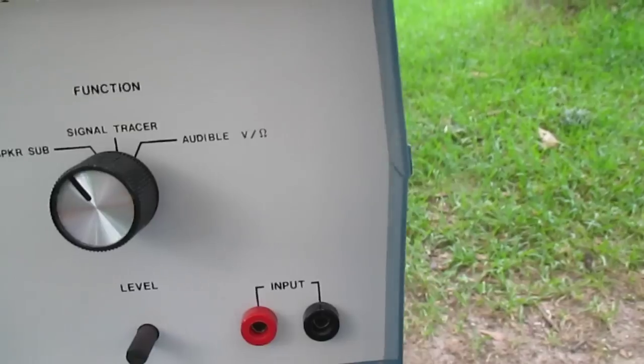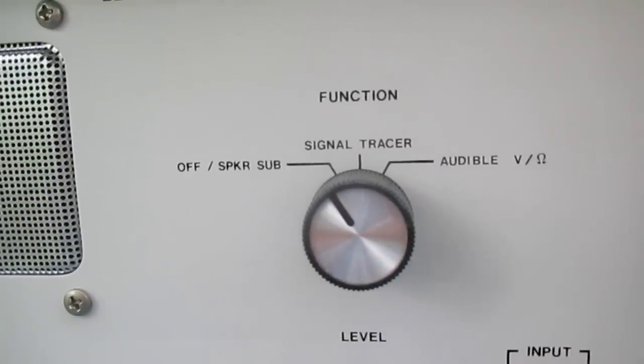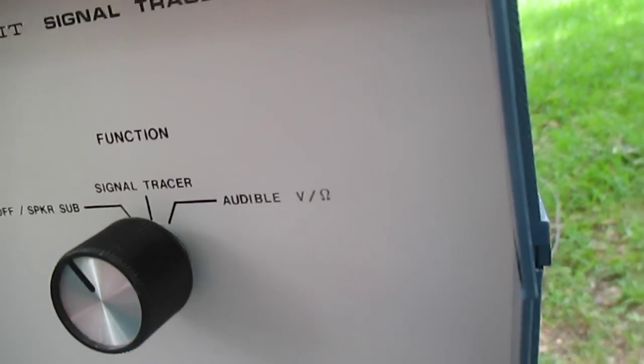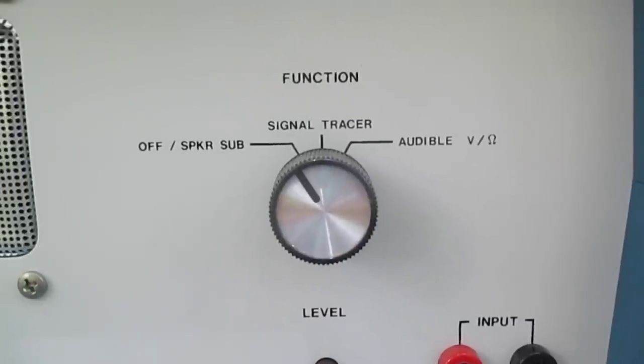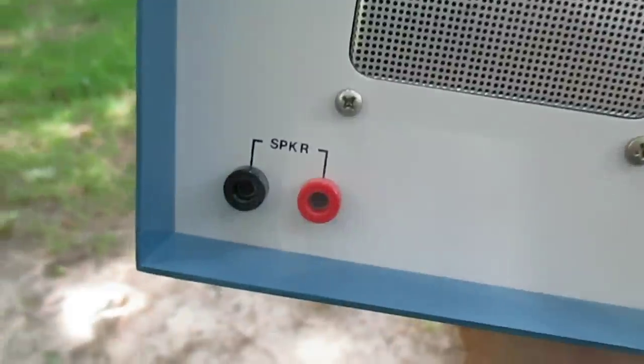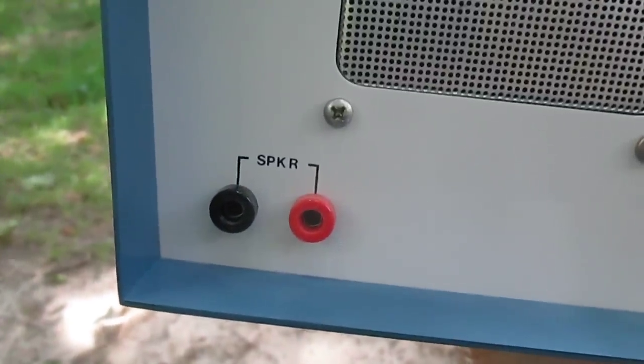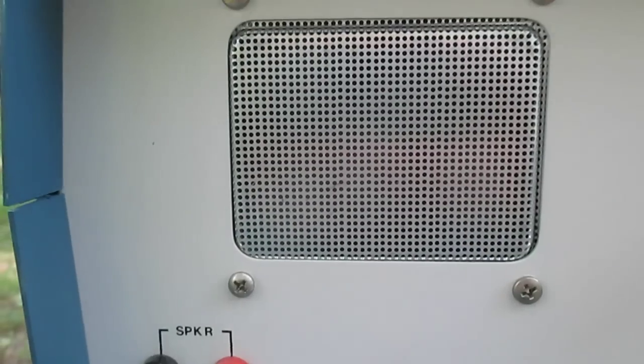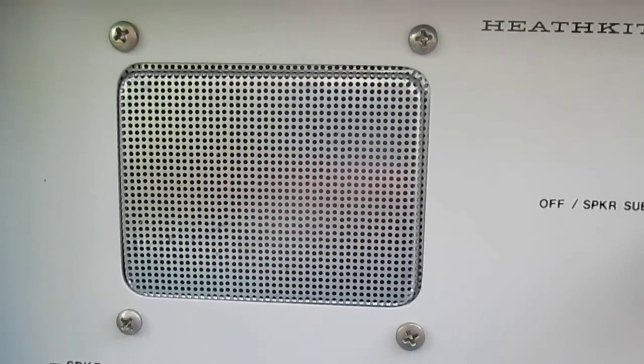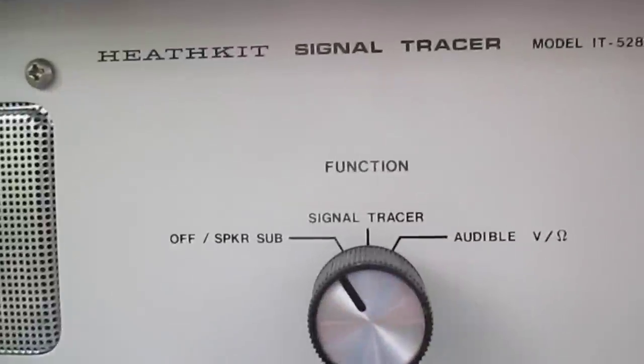On the front it's very simple. We have our speaker. We have our selector switch for off and speaker substitution. That's where you can have the actual instrument turned off and plug a cable into the speaker jacks and substitute for a possible defective speaker in the item under test.